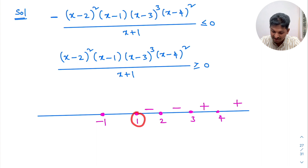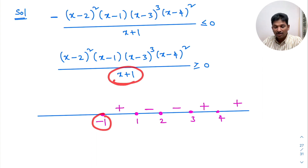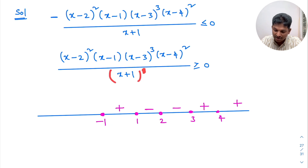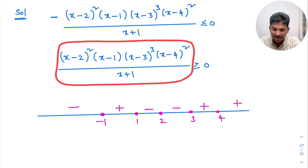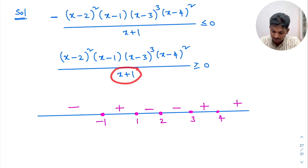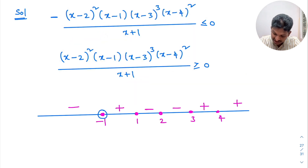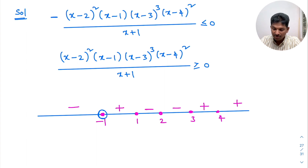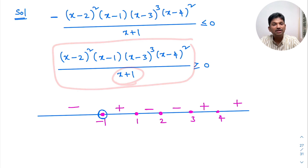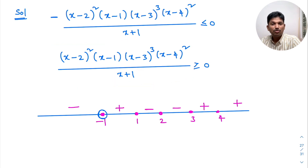1 is from (x-1) — odd power, so sign changes: minus becomes plus. -1 is from (x+1) — odd power, so sign changes: plus becomes minus. Since this is a rational function, the denominator cannot equal 0, so x ≠ -1. At -1, I will mark an open circle — minus 1 is not part of the solution.